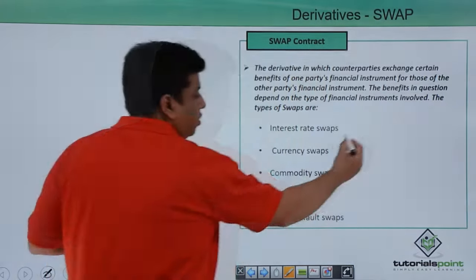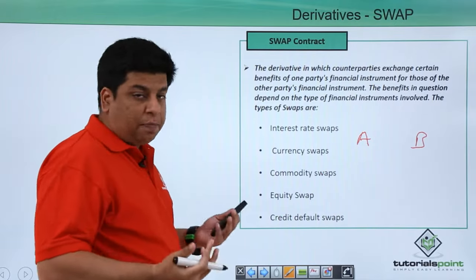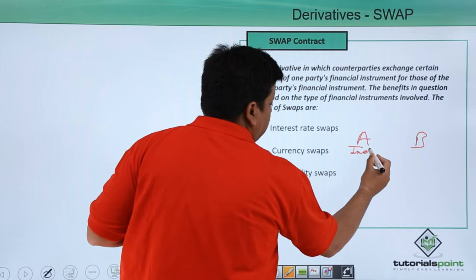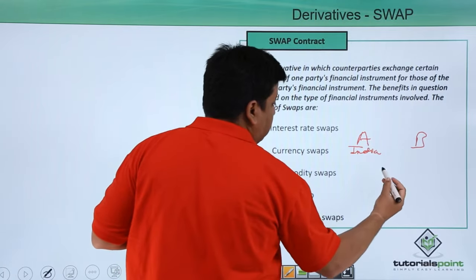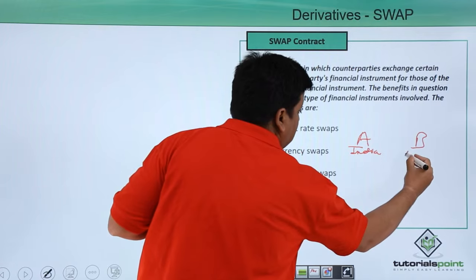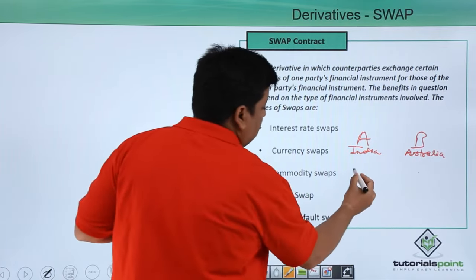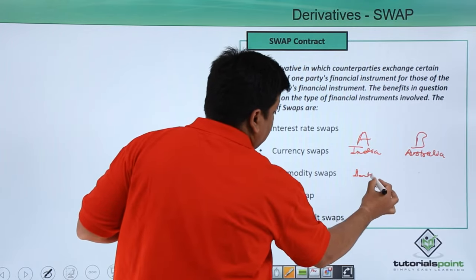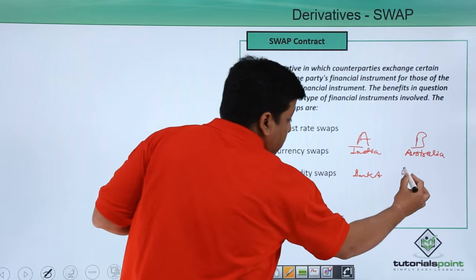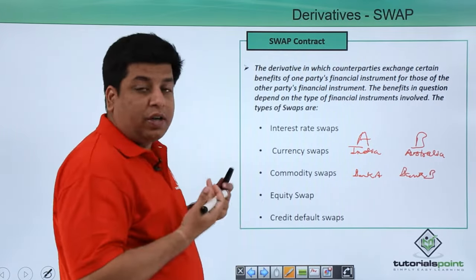Let's say there is company A and company B. Company A is based out of India and company B is based out of Australia. And then there is bank A for company A and there is bank B for company B.